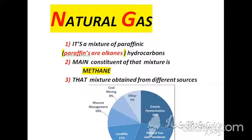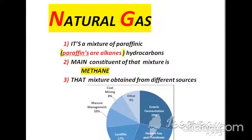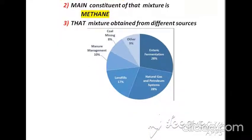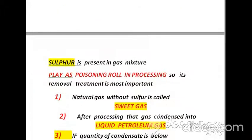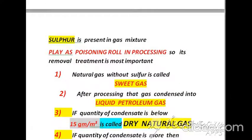In this video we will discuss purification of natural gas with the help of different purification steps and a process flow diagram. Natural gas is a mixture of paraffins, which are alkanes. The main constituent of that mixture is methane. That mixture is obtained from different sources — fermentation, natural gas wells, and petroleum systems are two main sources. About 28% sulfur is also present in that gas mixture and plays a poisoning role in processing.